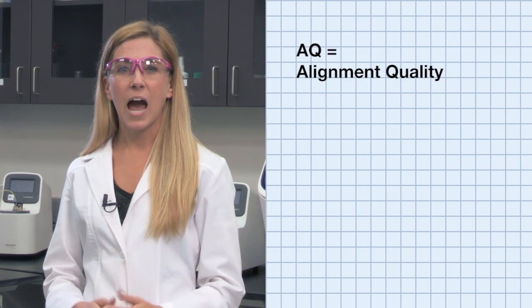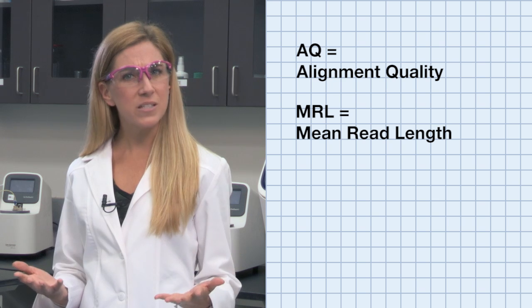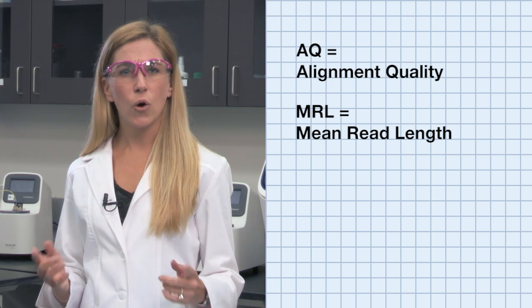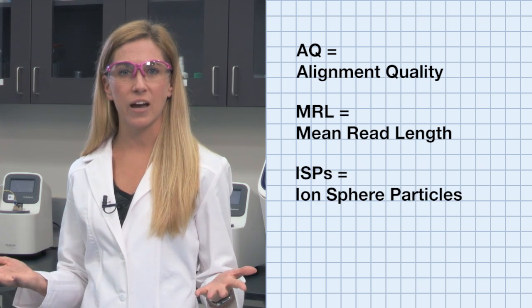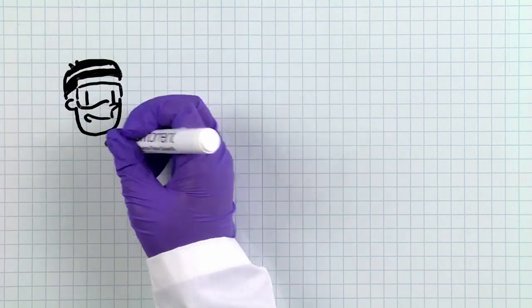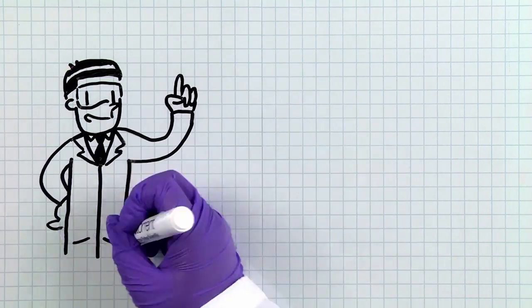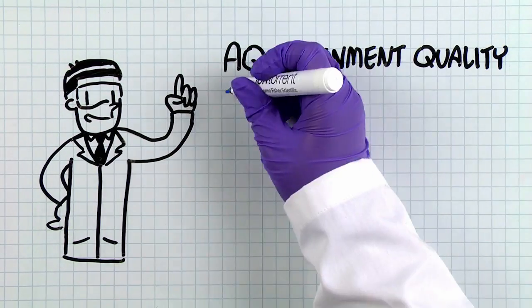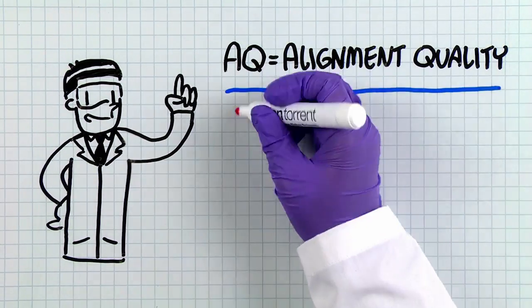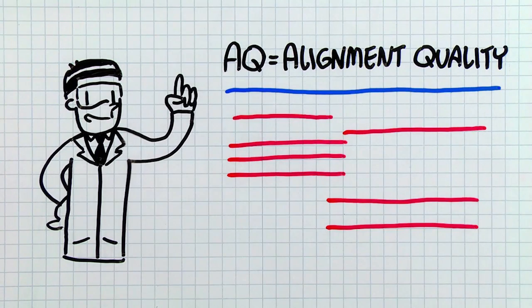After you perform your sequencing run, there may be questions about how your sequencing results turned out. People may ask: how was the AQ, or what was the MRL, or for Ion Torrent technology, how many ISPs did you get? AQ refers to alignment quality — in other words, how well did your sample sequence align with your reference sequence?